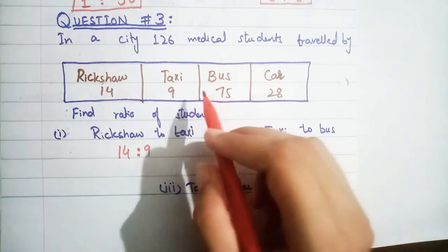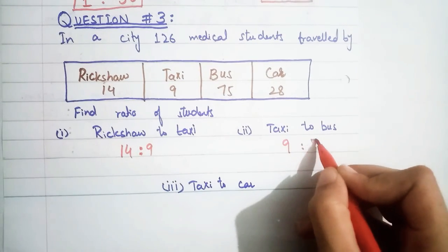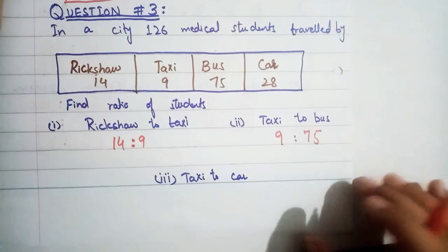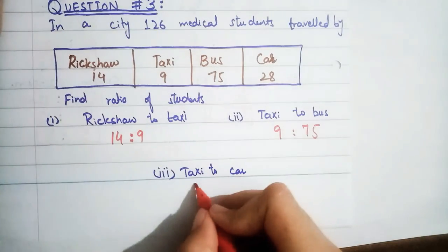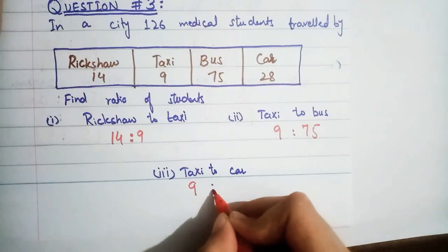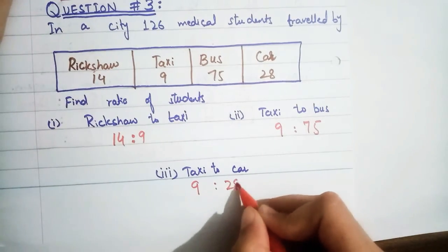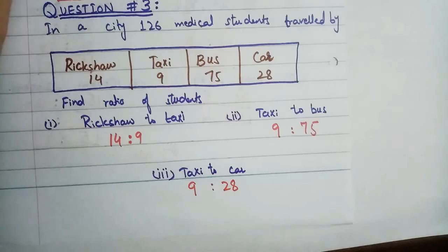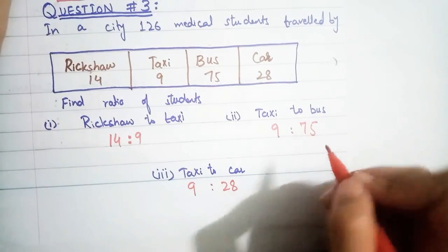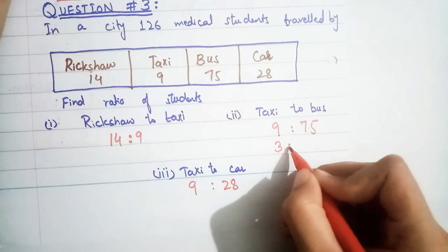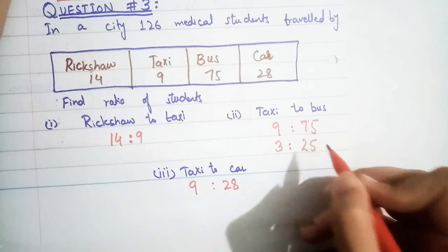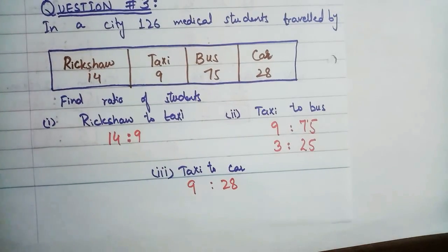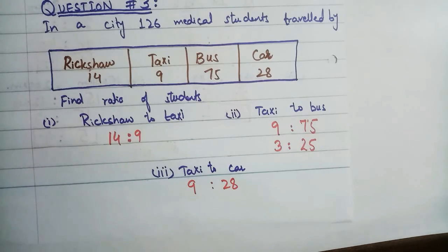Taxi to bus: 9 : 75. Divide both by 3 — 3 × 3 = 9 and 3 × 25 = 75 — giving 3 : 25. Taxi to car: 9 : 28. This cannot be divided further, so the answer remains 9 : 28. If simplification is possible, proceed; otherwise leave the ratio as it is.